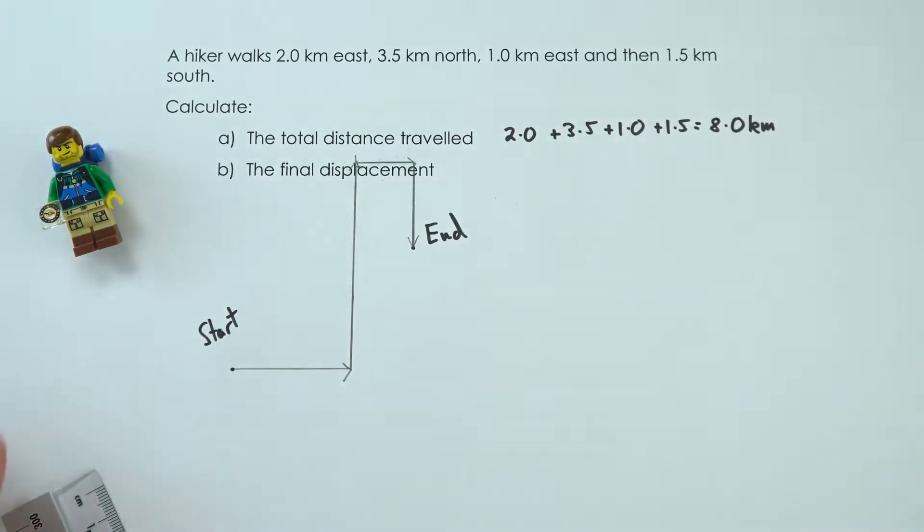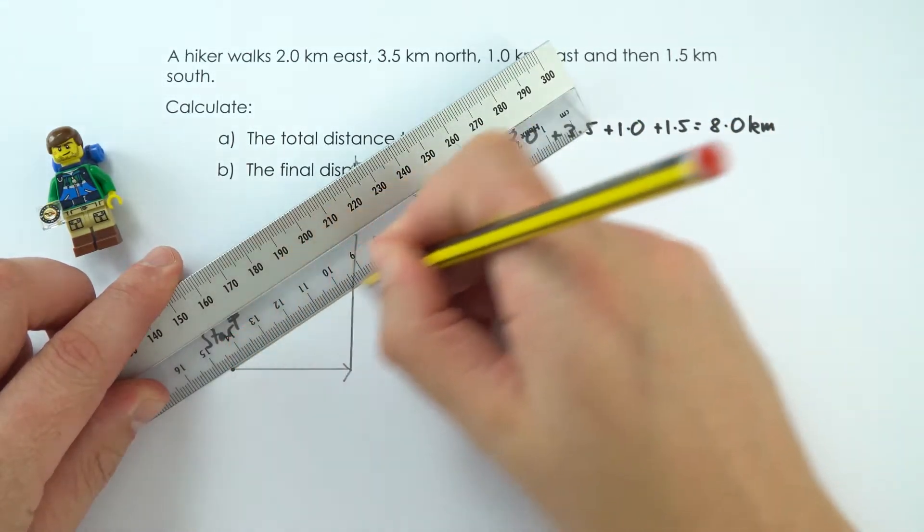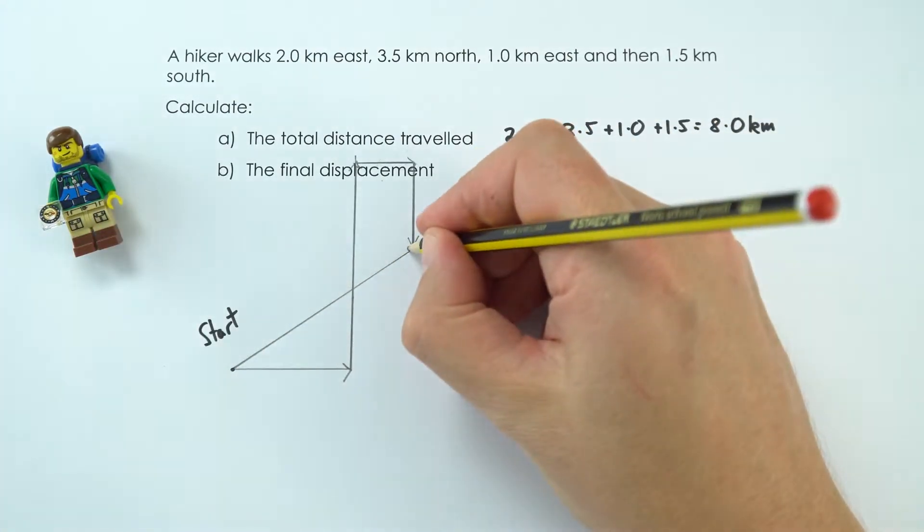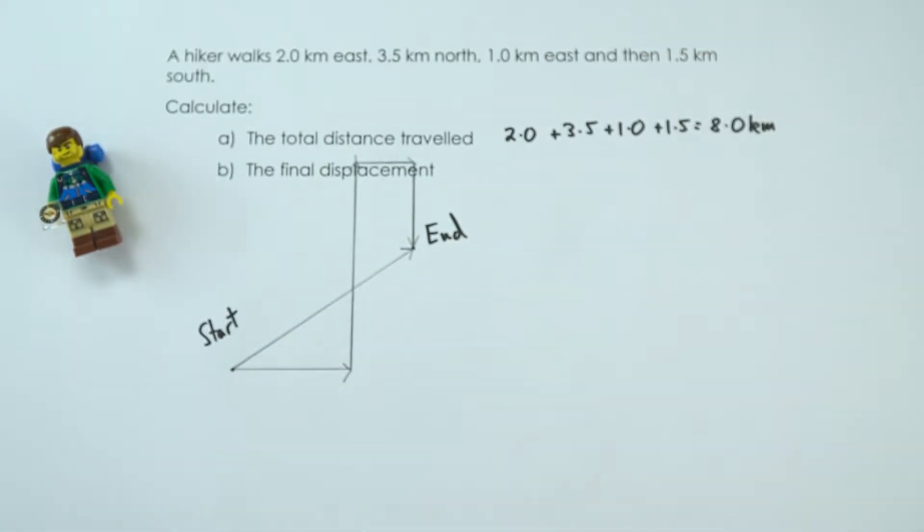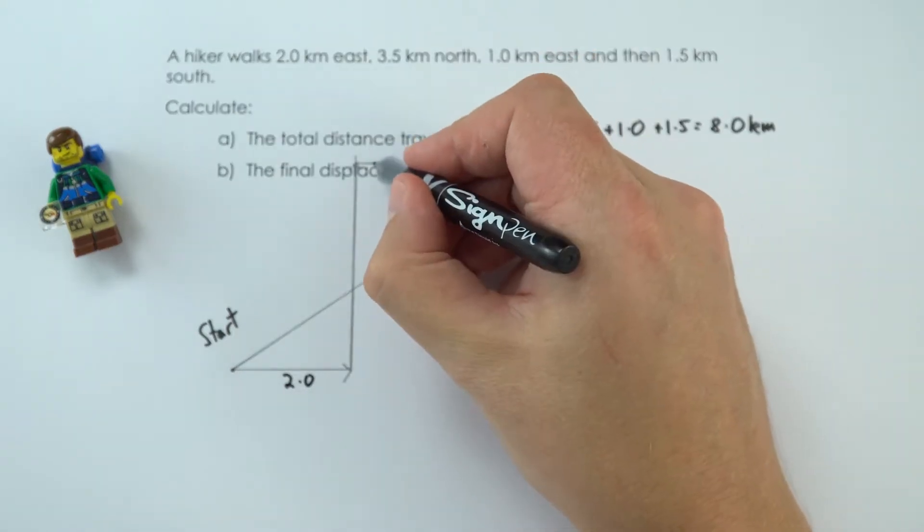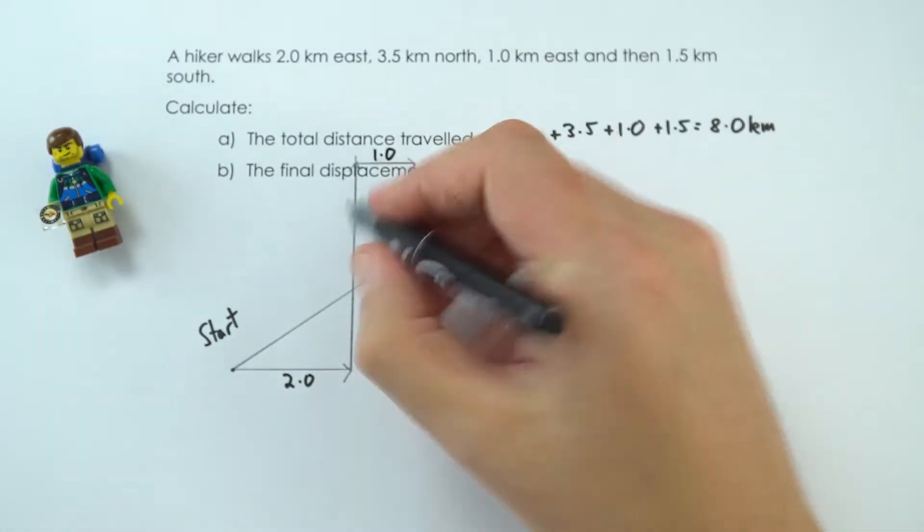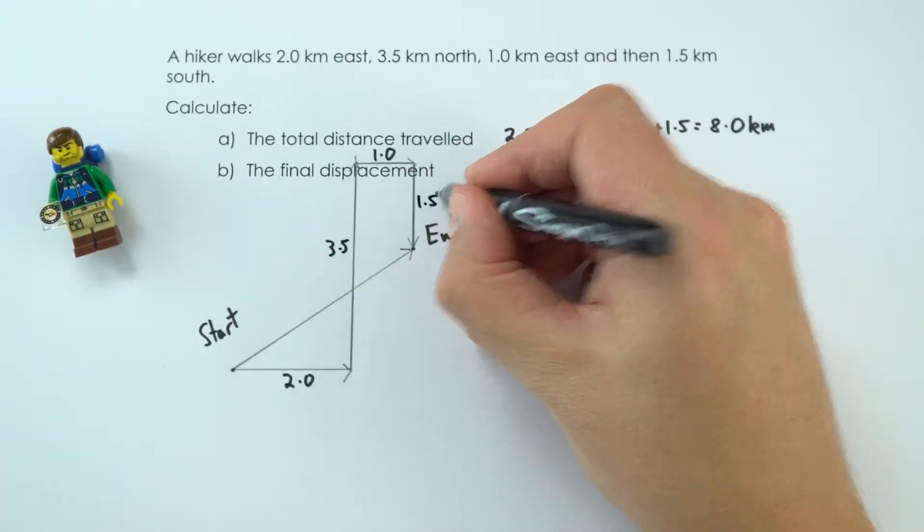What we have there is a vector diagram. I'm going to join up the start and end positions because this is what we're interested in now. This is the displacement. If I put some numbers on, we know that this length here is 2.0, that length is 1.0, going up it goes 3.5 and then 1.5.